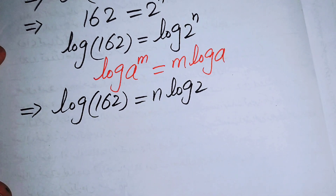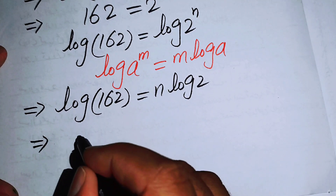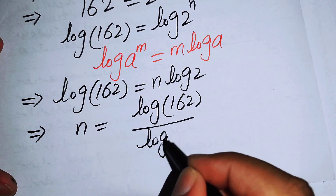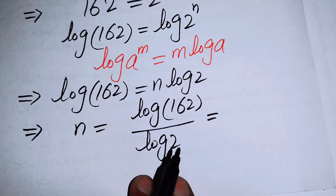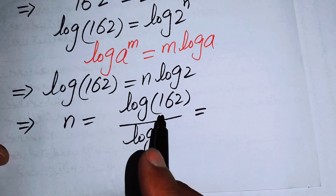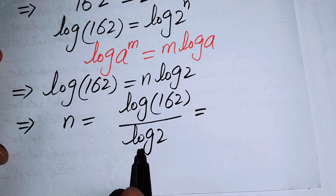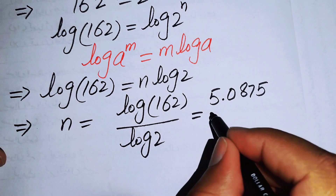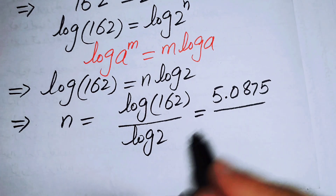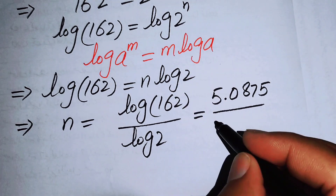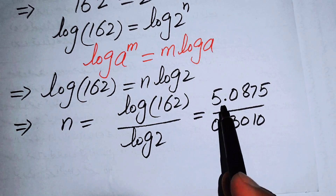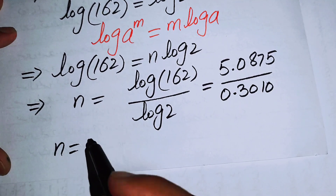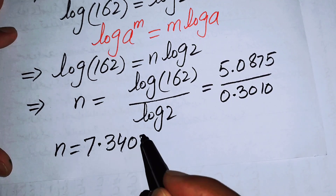We move log 2 to the left hand side and get n equals log of 162 over log of 2. Using a logarithmic table or calculator, the value of log 162 is 2.2095 and the value of log 2 is 0.3010. Dividing gives n equals approximately 7.3402.